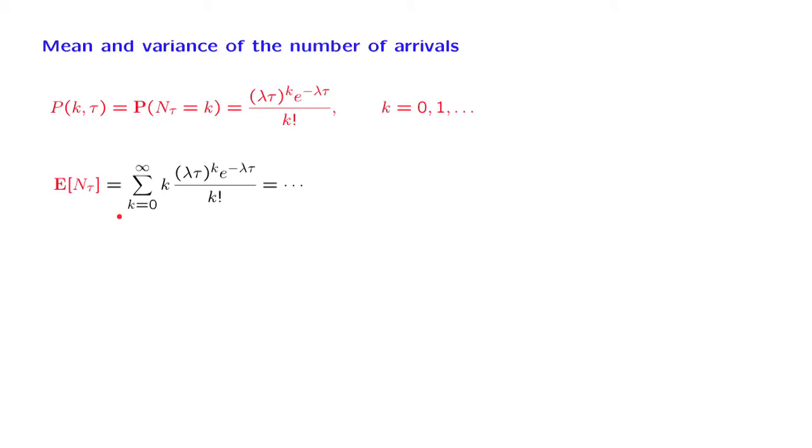Regarding the mean, we could use just the definition of the expected value and then carry out this calculation, which is not too hard, and in the end we would obtain an answer equal to lambda times tau. This is indeed the correct formula for the expected value, but let us understand why this formula should be true without doing any calculation.